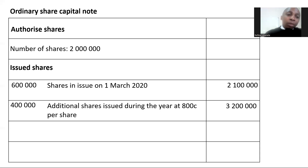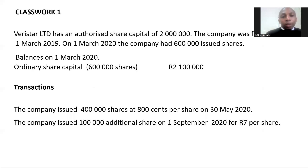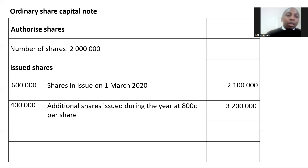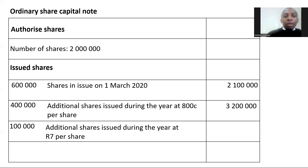At this point, 1 million shares are with the shareholders, accounting for the 400,000 shares that were issued. Then the company issued another 100,000 additional shares on the 1st of September 2020 at R7 per share. That is also recorded in the ordinary share capital node — 100,000 additional shares issued at R7. You simply take 100,000 multiplied by R7, which gives you R700,000.